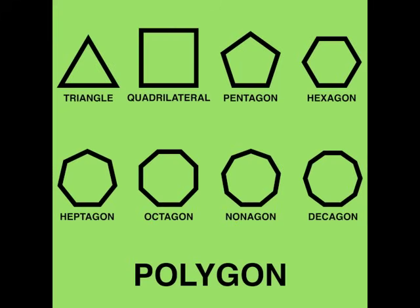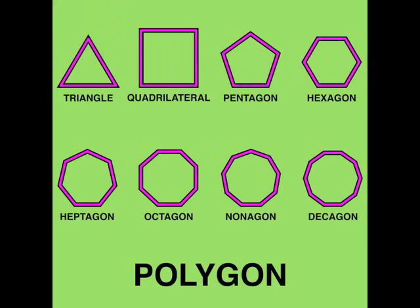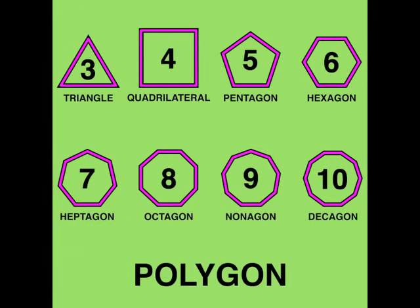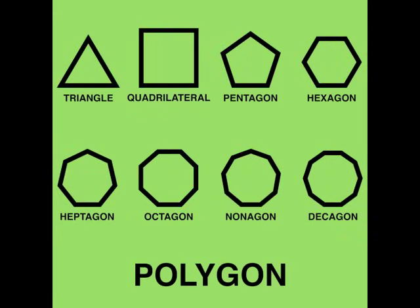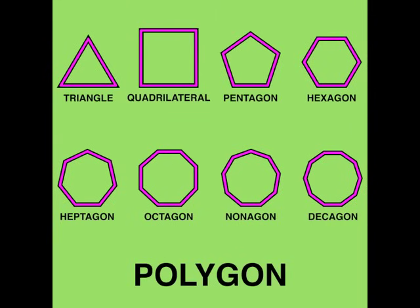A polygon is a shape with lines that connect. The number of sides tells us the name of the shape.